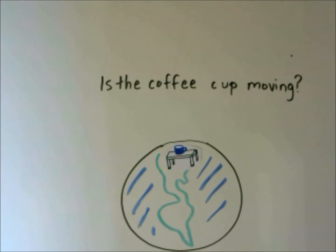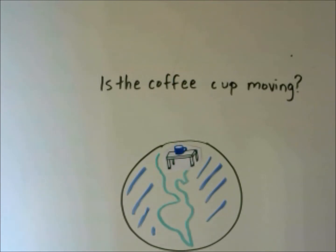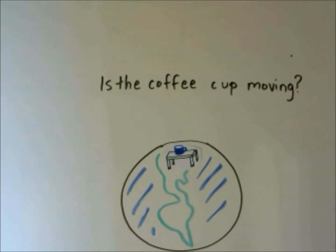Think about the coffee cup sitting on a table in Virginia. Is the coffee cup moving? Well, it depends on your frame of reference. If you are comparing it to the top of the table, it's not moving. But if you're comparing it to the center of the earth, it is moving as the earth is spinning all the time. It's also moving relative to the Sun and the solar system.